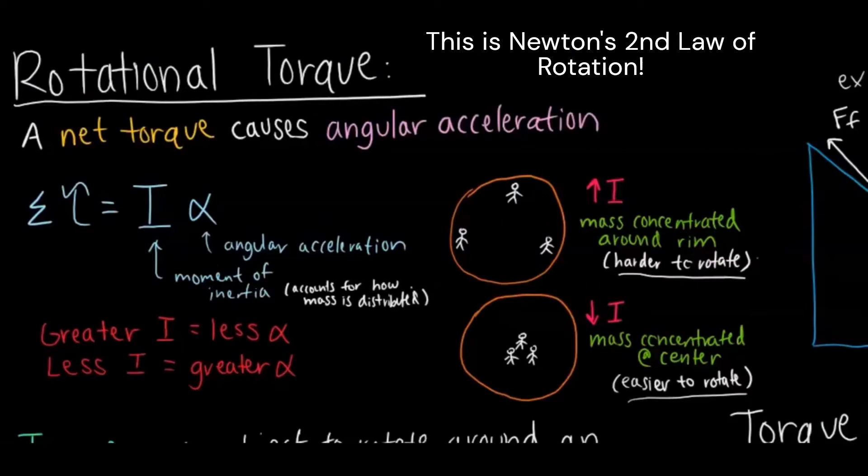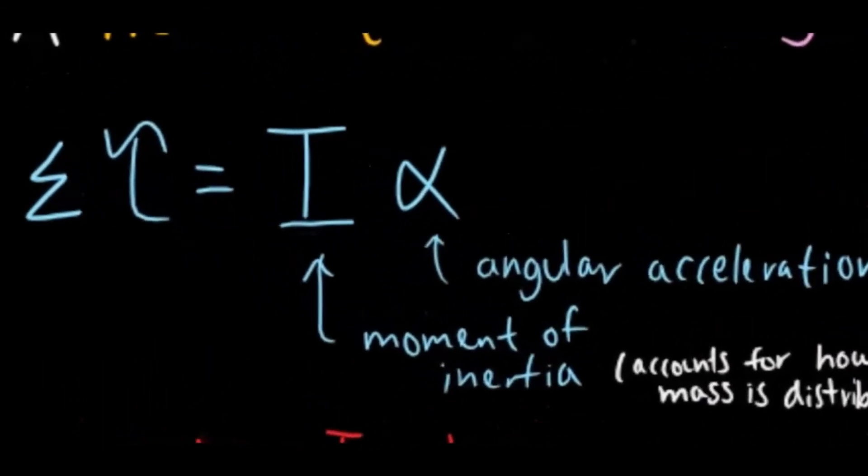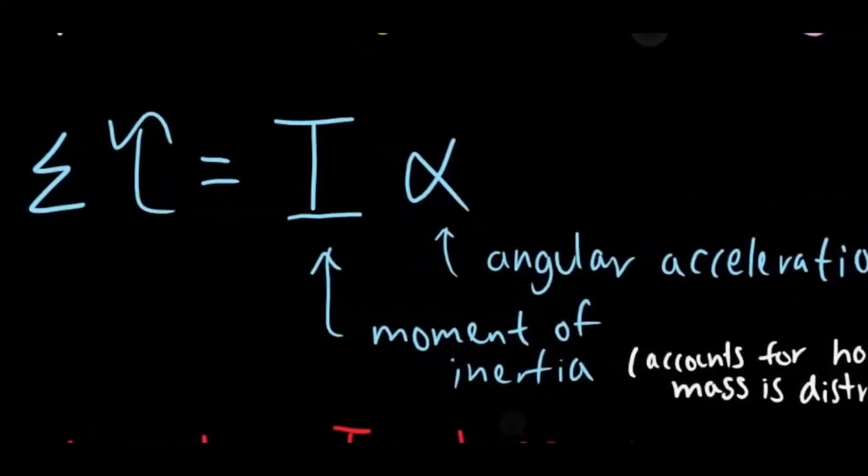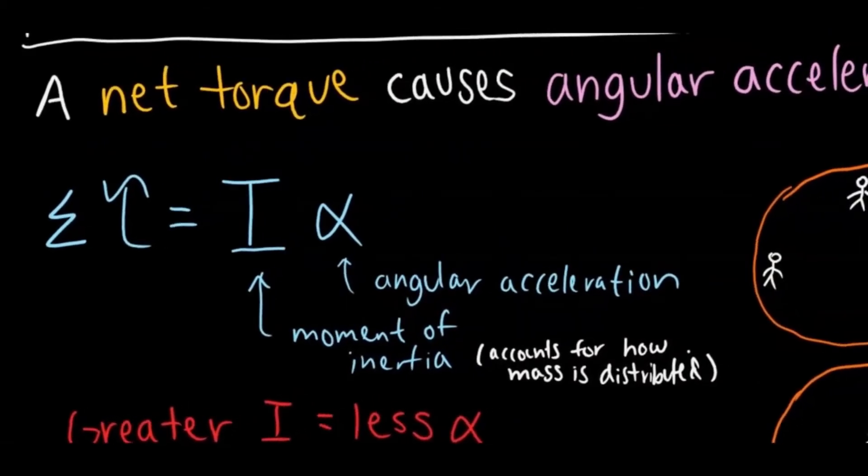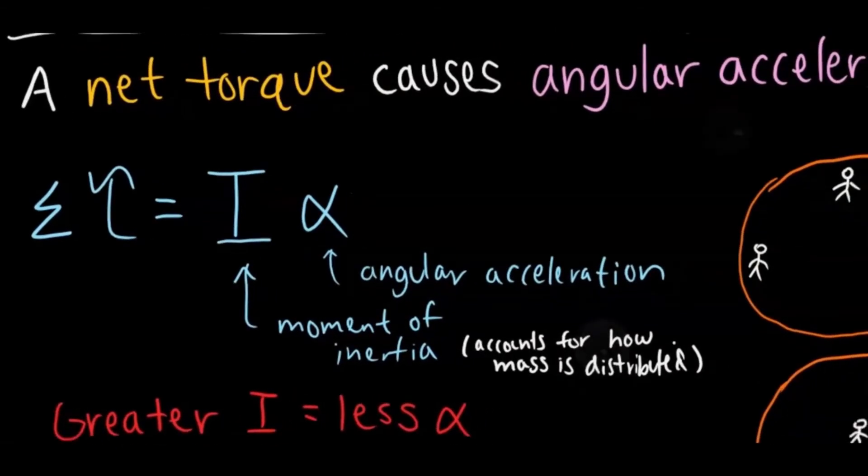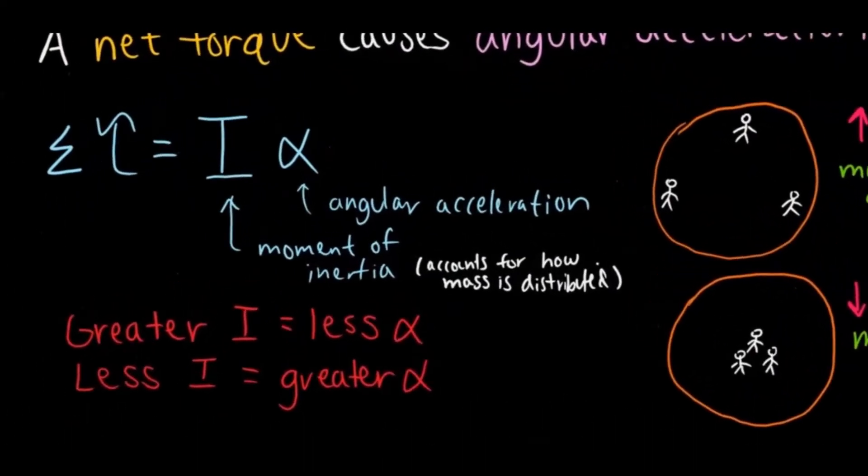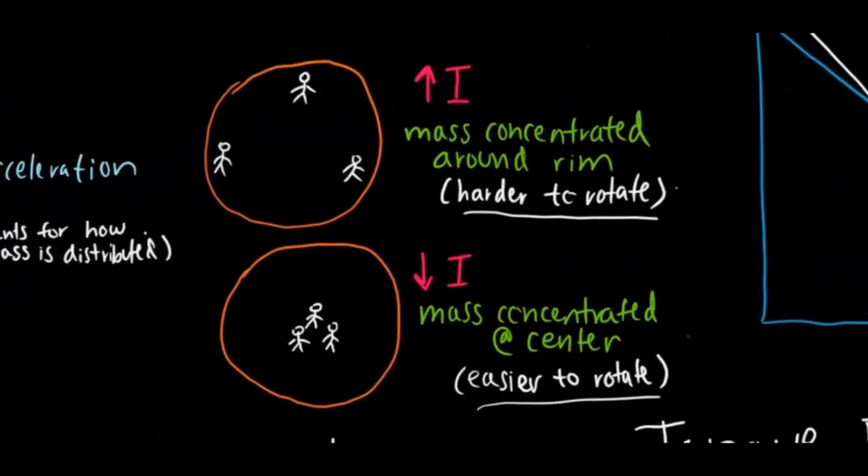Alright, so the next big topic is rotational torque. So this sort of connects with forces and dynamics. A net torque is going to cause angular acceleration. An equation here is net torque equals moment of inertia, which is sort of like mass except it accounts for how mass is distributed, times angular acceleration. So that's very similar to net force equals ma. A greater moment of inertia will lead to less angular acceleration given that torque is the same, and vice versa for less moment of inertia.